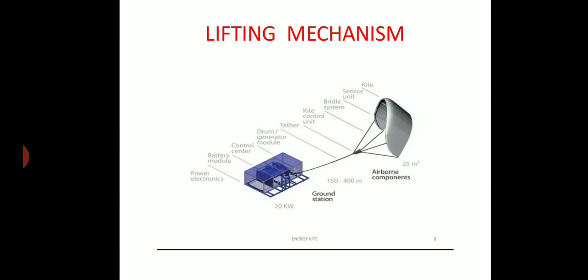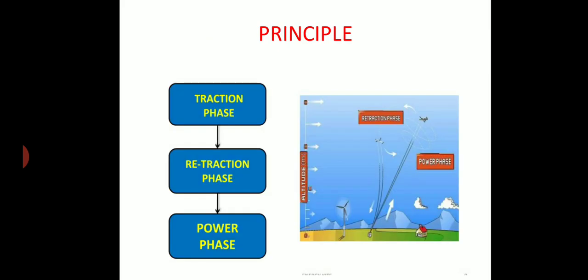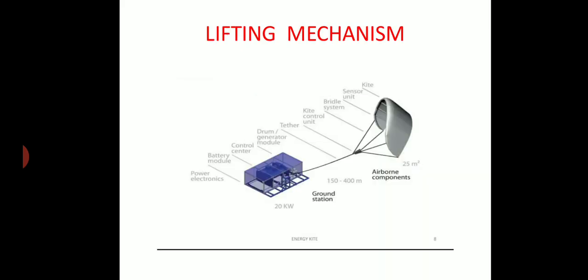As the wind moves, the kite moves in the direction of the wind and wind takes the kite to the sky, whereas the tether is still connected with the ground station, which connects the ground station and air gun components. The tether is 150 to 400 meters in length.